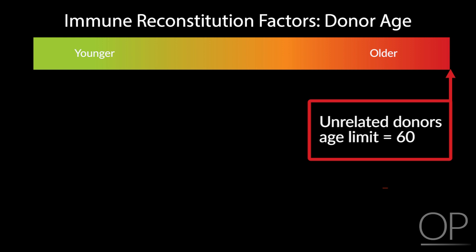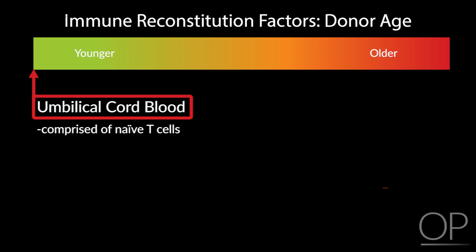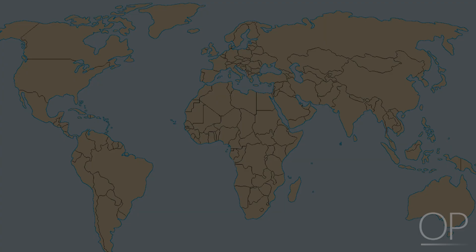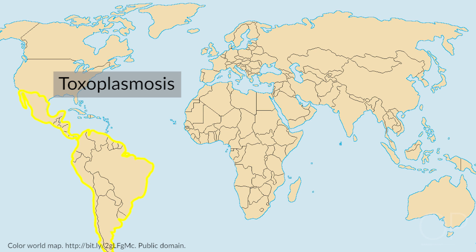One exception is cord blood transplant: umbilical cord blood is mostly comprised of naive T cells and lacks transfer of T cell memory, making cord blood recipients more vulnerable to viral infections during the first phase of T cell reconstitution. Where the patient comes from also matters — patients from Mexico or other Latin American countries are more often exposed to toxoplasmosis, which can reactivate after transplant, while patients from Egypt and the Middle East have a high incidence of hepatitis C exposure that can also reactivate. You need to look for things linked to the geography where the patient grew up.